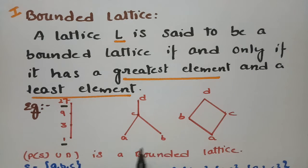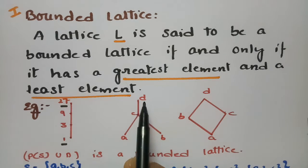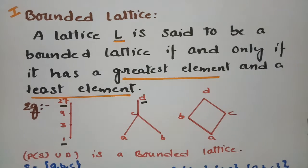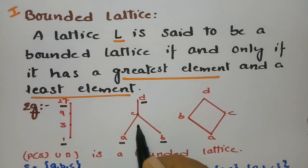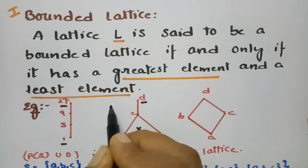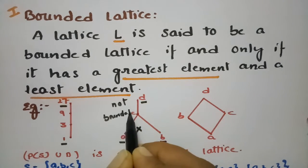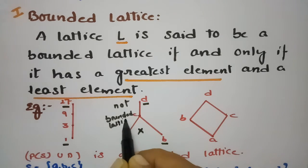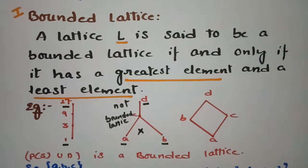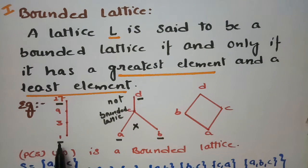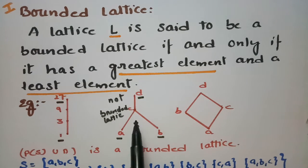Consider another lattice with elements A, B, C, D. There is a single top element D, but there are two least elements, which means this is not a bounded lattice. A bounded lattice must have a single greatest element and a single least element.